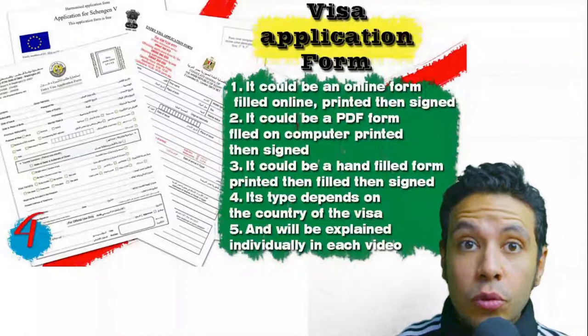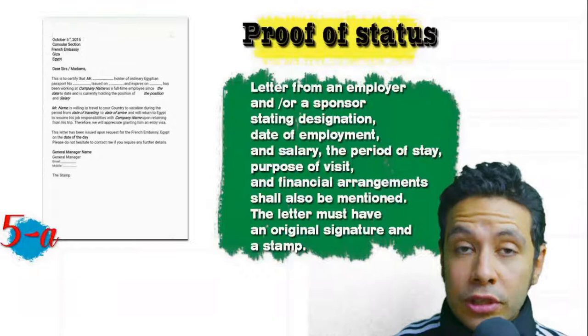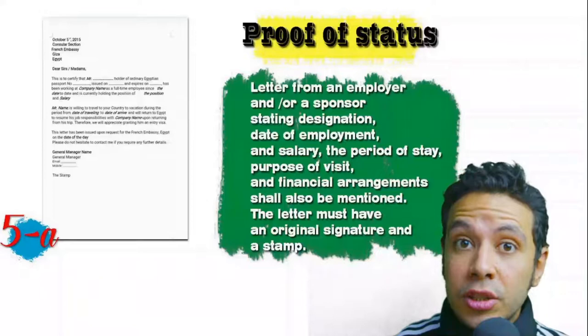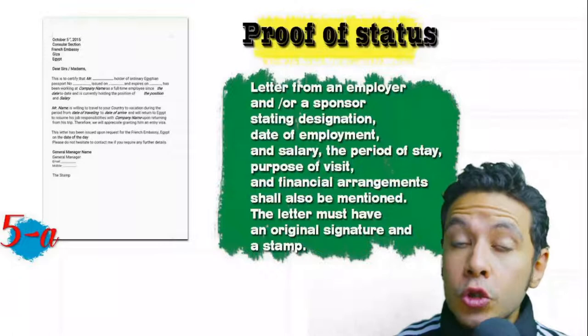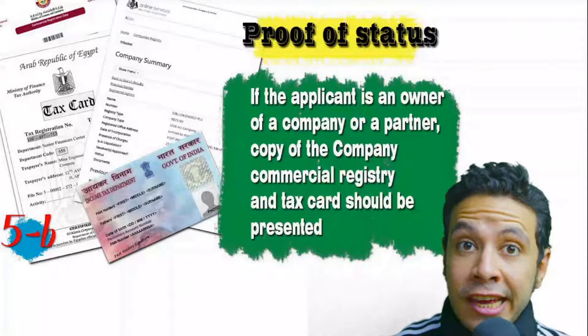In most visa application processes you will need to provide proof of status. If employed, provide a letter from your employer or HR department mentioning your name, work details, salary, address, and contact numbers — with original signature and stamp. If you own a company, present your commercial registry and tax card. If you are a student, provide an enrollment letter from your university or school.